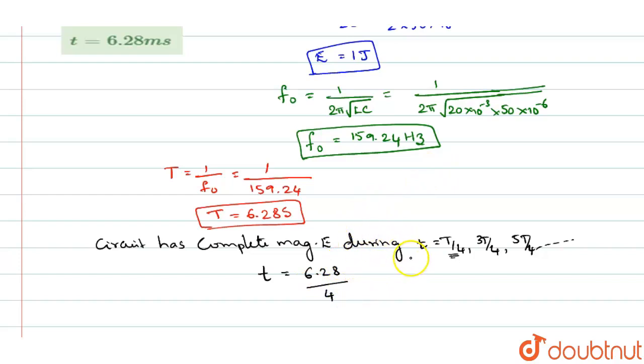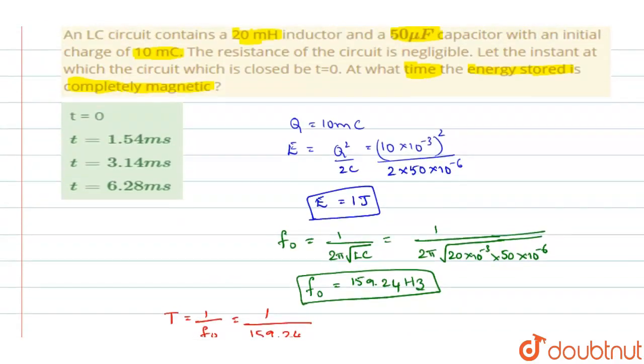And when you do it, you get this as 1.57 seconds. So the time during which the magnetic energy is maximum is 1.57 seconds. So it is very similar to 1.54 milliseconds. So option A will be the right answer.